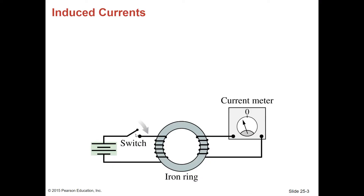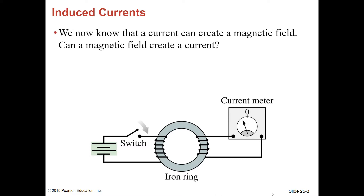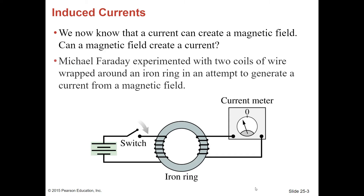Notice it looks like you have a circuit here, but you don't really have a closed circuit. You've got this iron ring here, so these wires aren't connected. We now know that a current can create a magnetic field — but can a magnetic field create a current? Michael Faraday experimented with two coils of wire wrapped around an iron ring in an attempt to generate a current from a magnetic field.